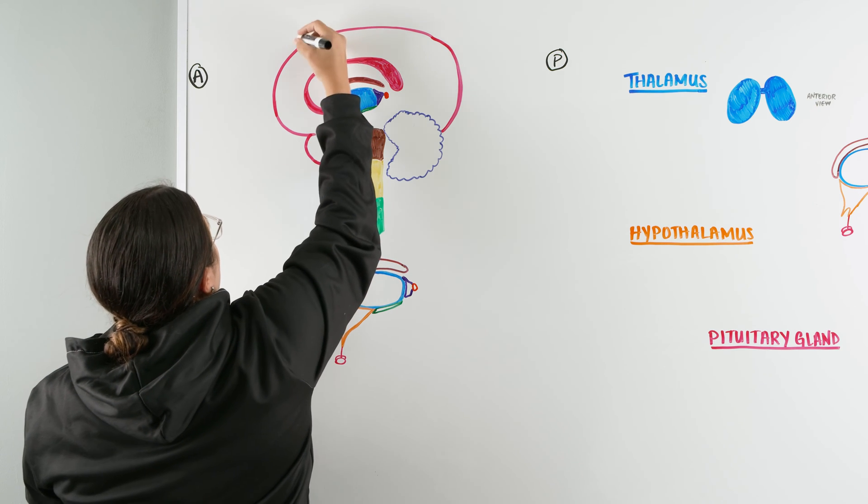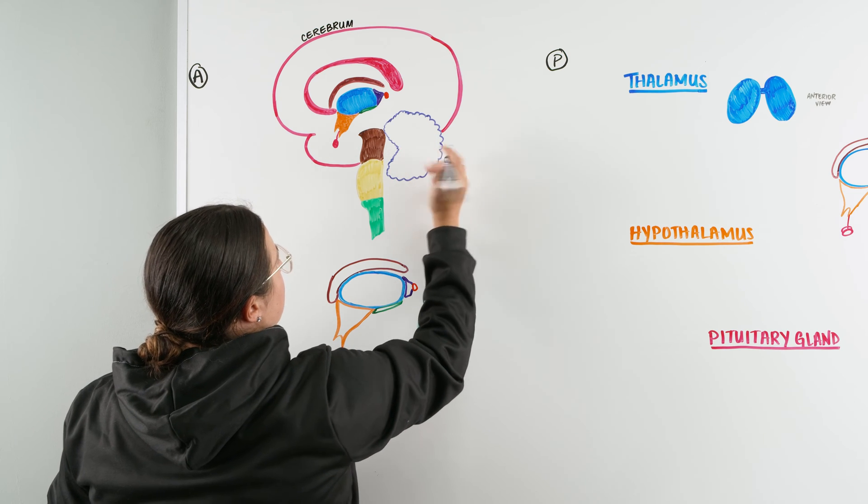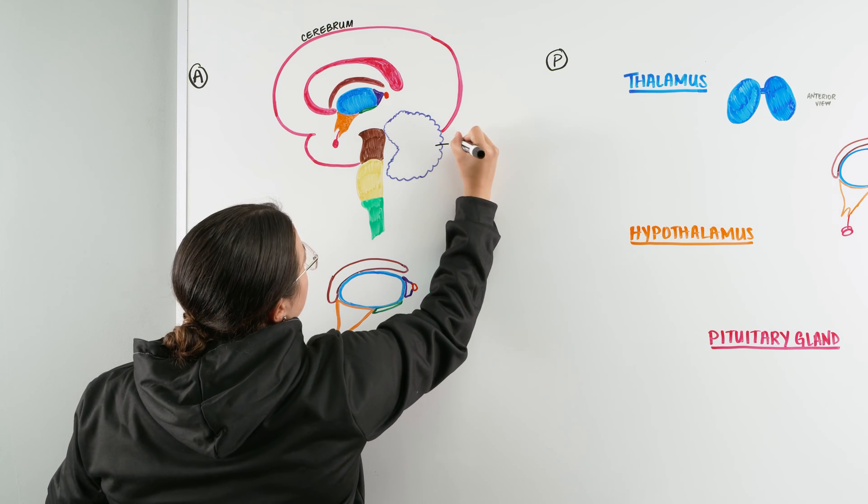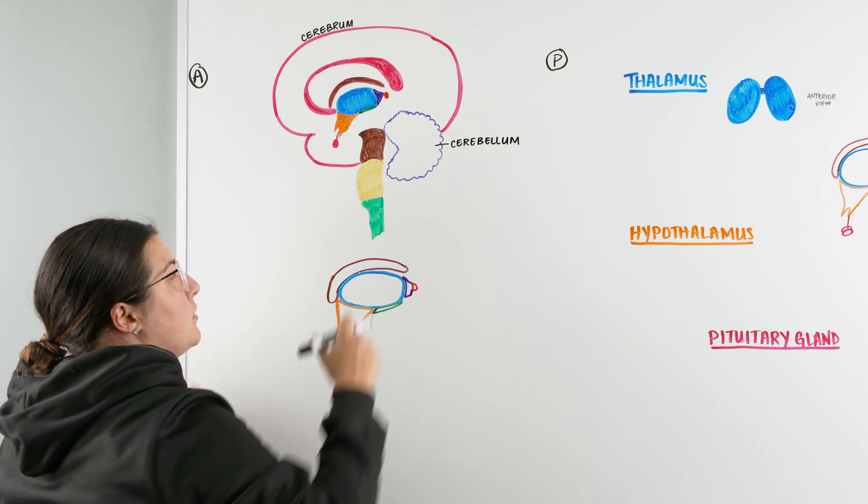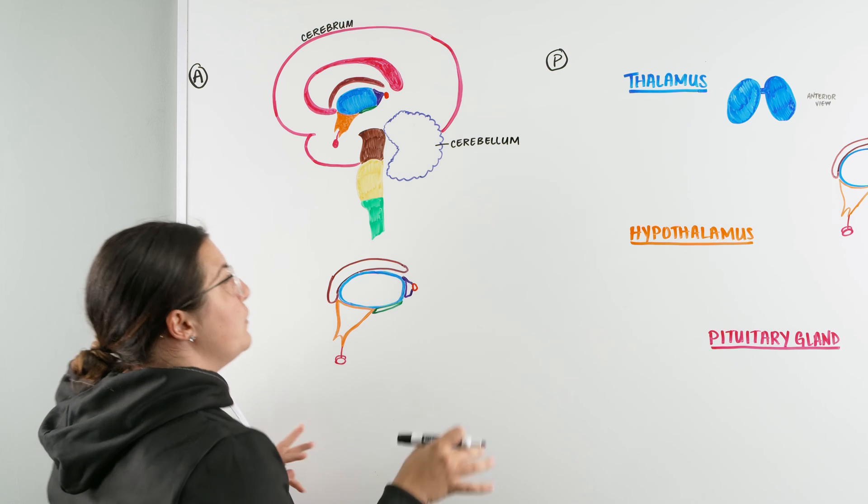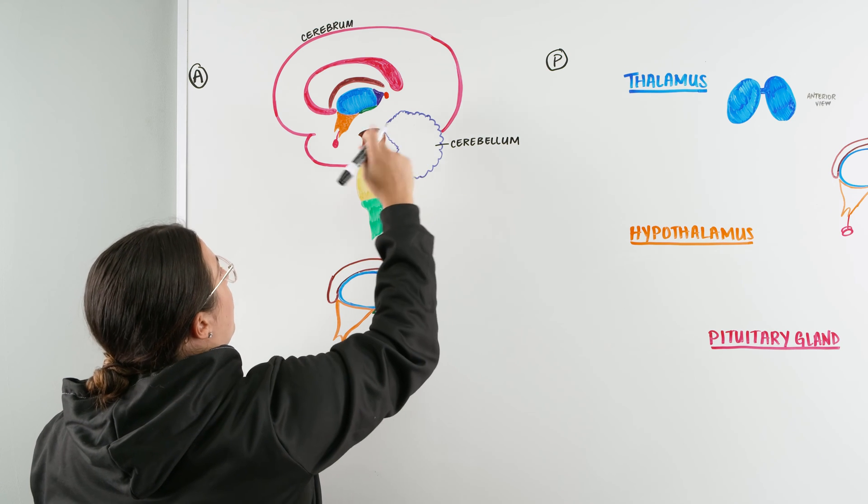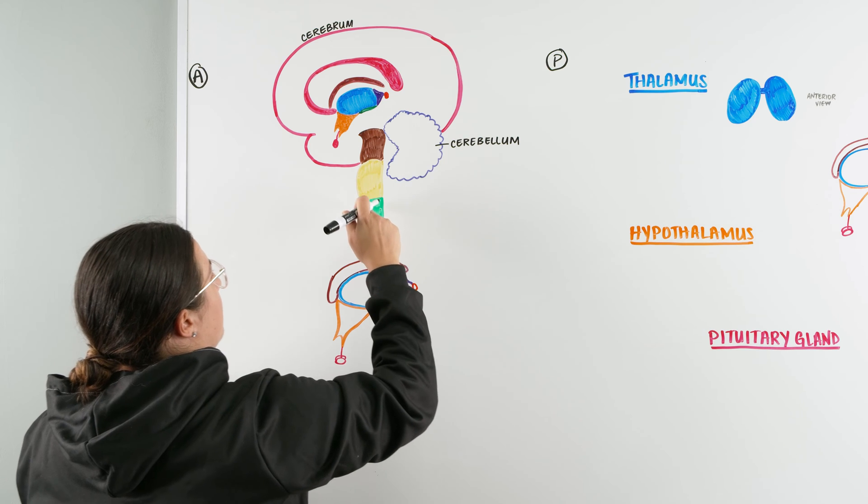This pink structure right here is our cerebrum. We have our structure back here in this darker blue which is our cerebellum, and we've dedicated already a video for each structure, the cerebrum and the cerebellum. In the future we're going to have one on our brain stem here which consists of our midbrain, our pons, and our medulla oblongata.